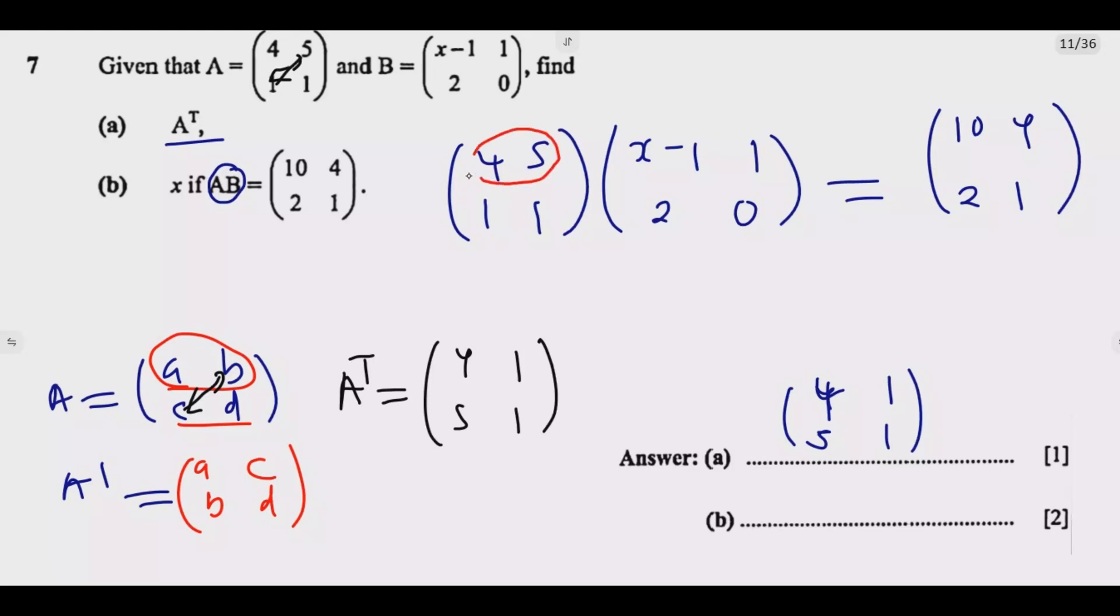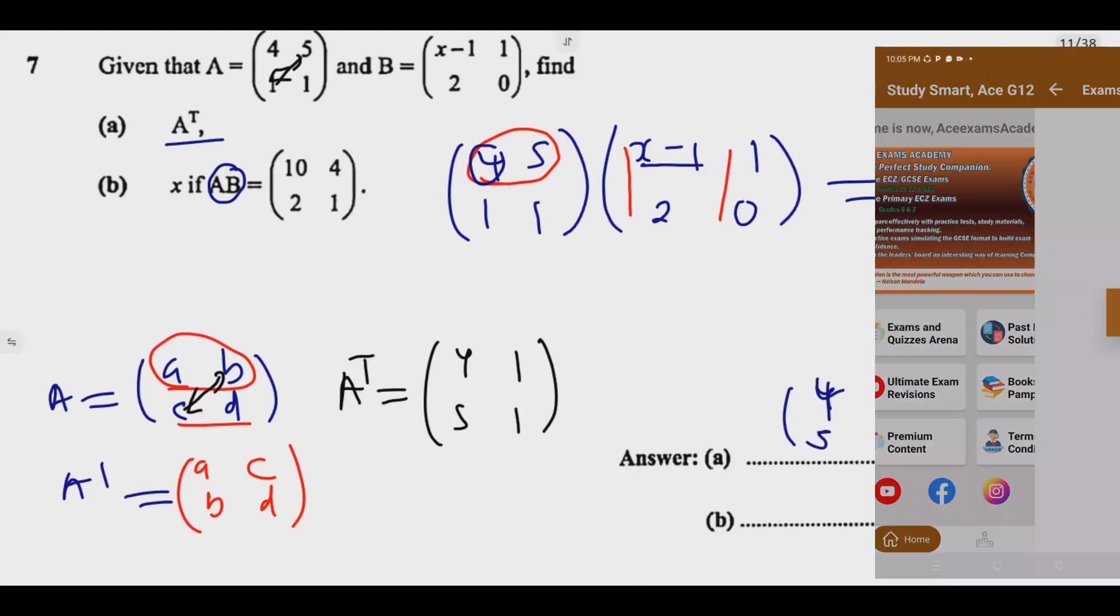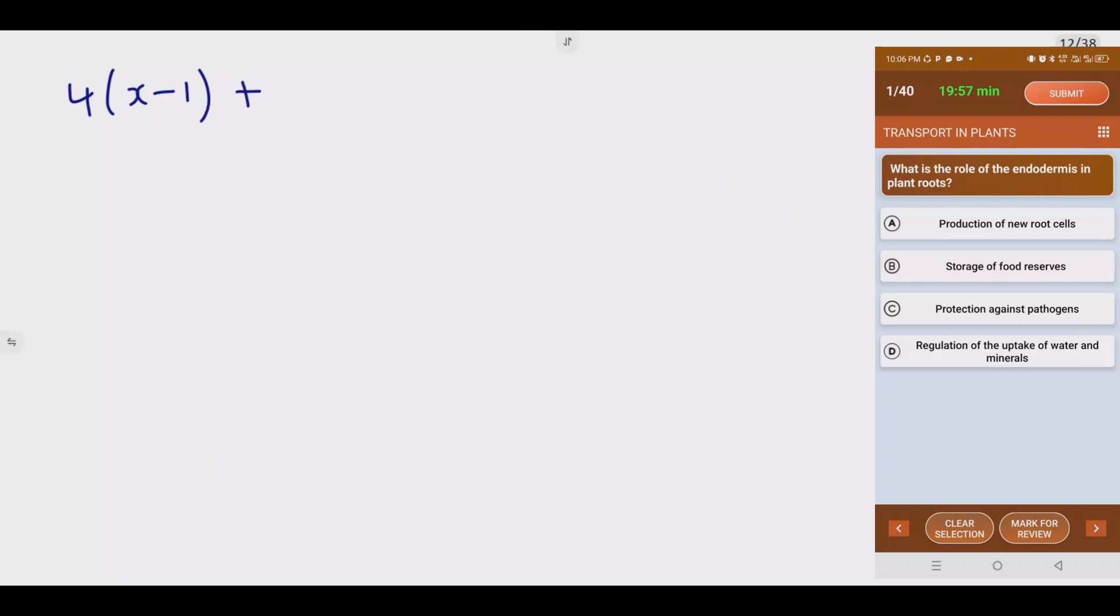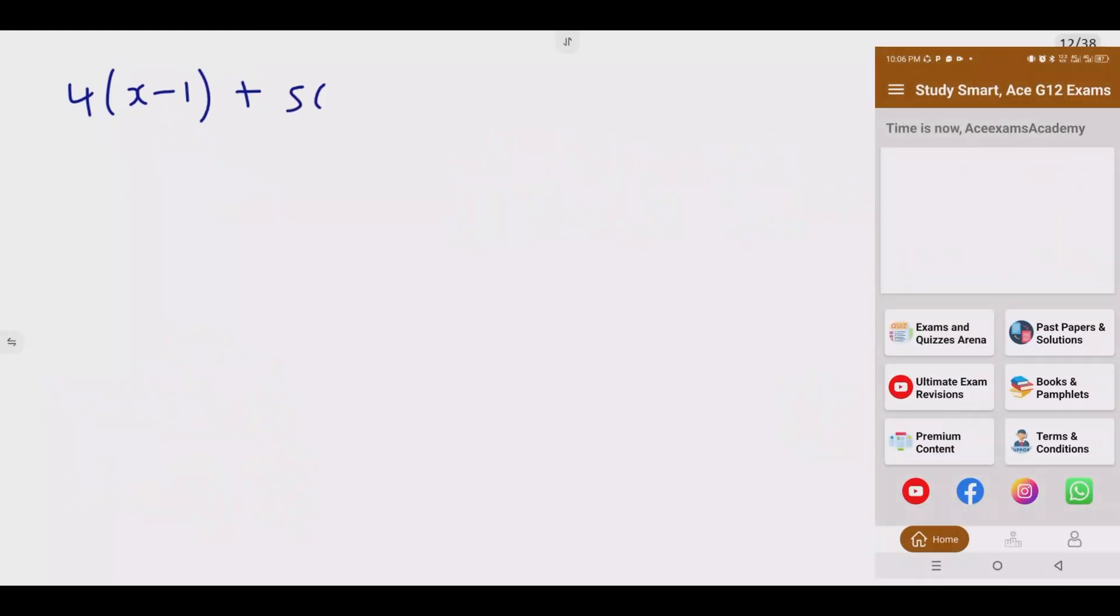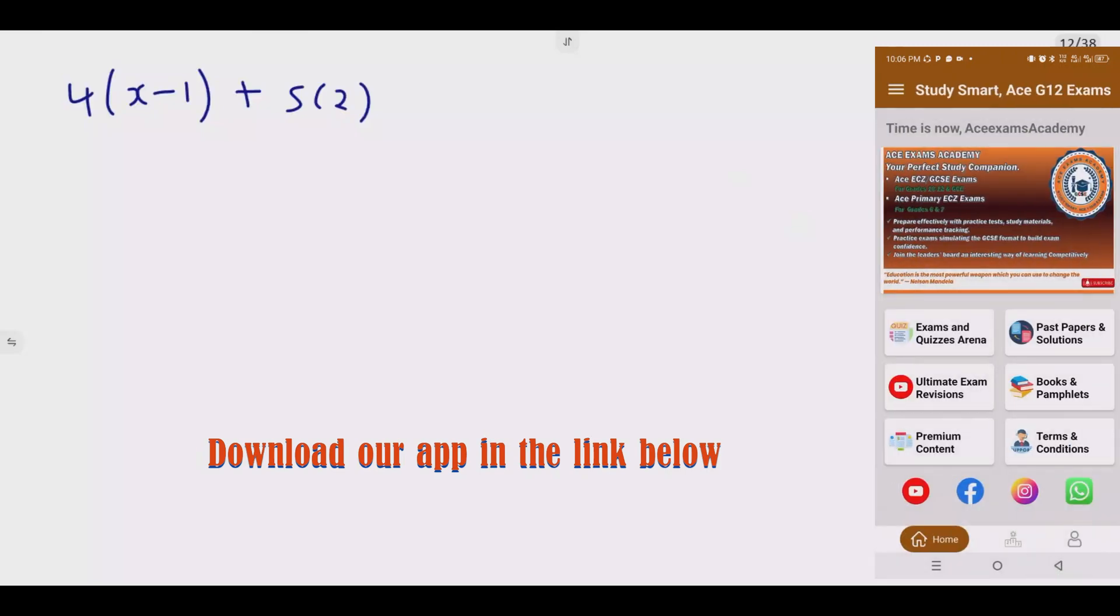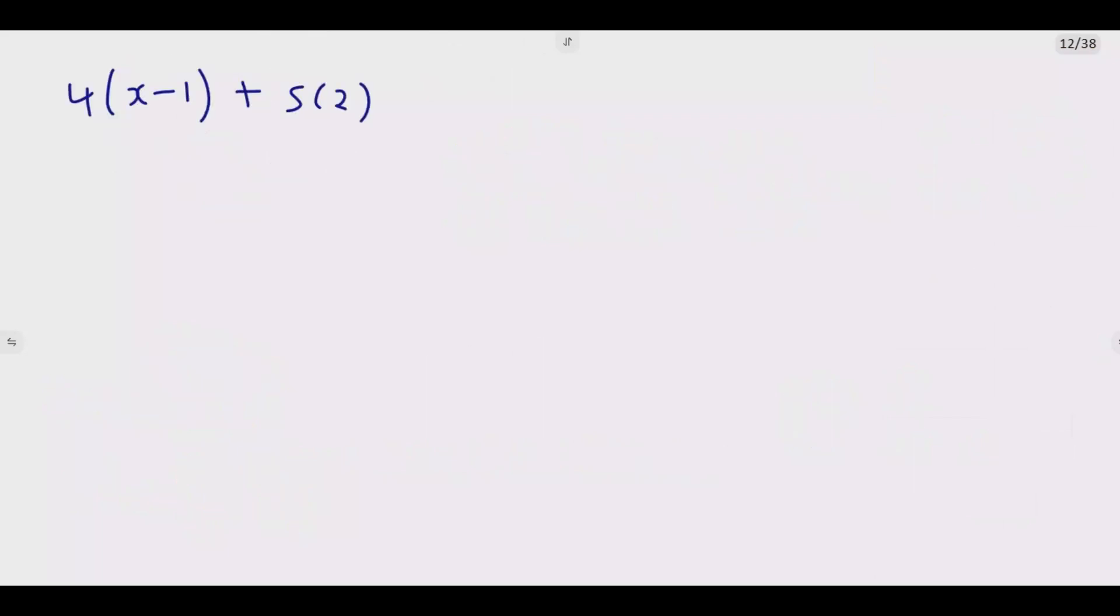As I create space, we multiply this one by this and this - that will be the first row. The first multiplication is 4 times X minus 1, plus 5 multiplied by 2. Then we move to the next element on top, which will be 4 times 1 plus 5 multiplied by 0.